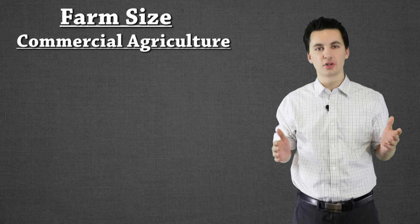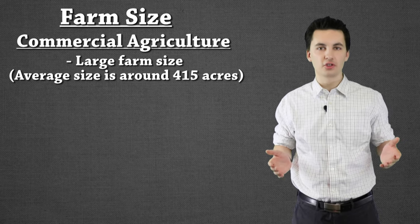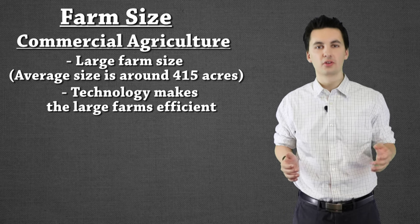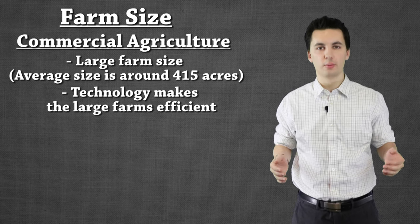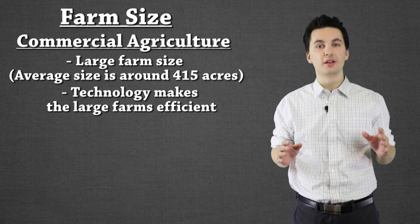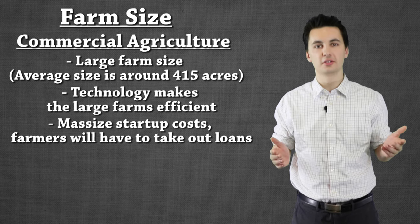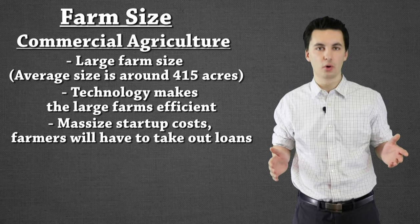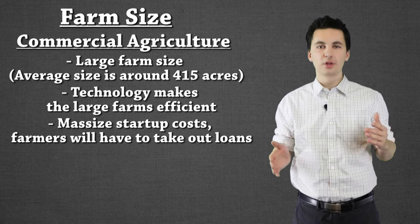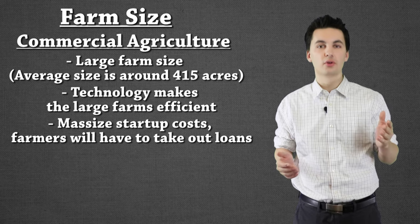The last big difference is farm size. Commercial agriculture has much larger farms, with an average size of around 415 acres. They use more machines to harvest efficiently across that much land, and the goal is to make money — the more products created, the more that can be sold. The downside is high startup costs; many farmers take out loans and go into debt, making it a very competitive business. Larger businesses also buy up farms to have them produce. Roughly 5% of farms account for about 75% of food production in MDCs.